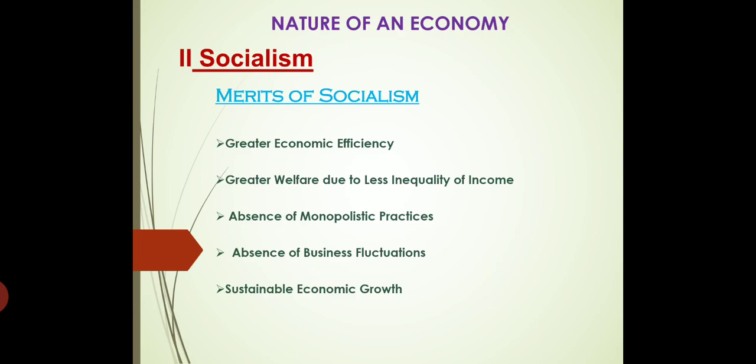Next is absence of monopolistic practices. Monopolistic is basically an economy where there are large numbers of sellers selling their products at different prices. But in a socialist economy, as it is governed by the government, only public enterprises are going to sell goods at one cost. Because of that, monopolistic and adulterated practices — which are demerits of monopolistic activities — will not be there in the economy.